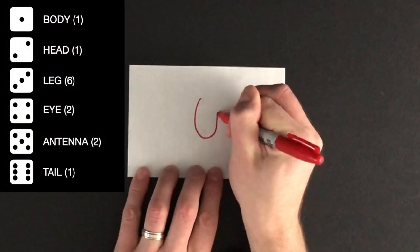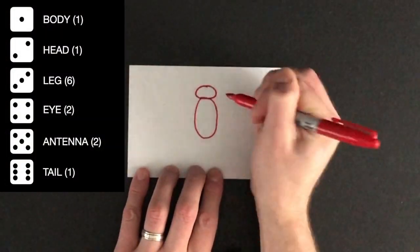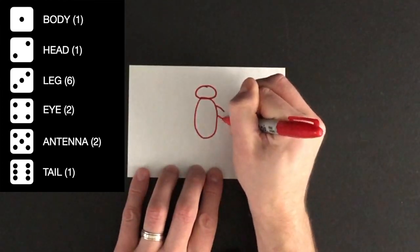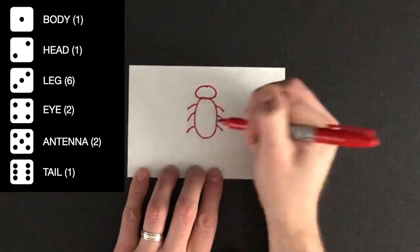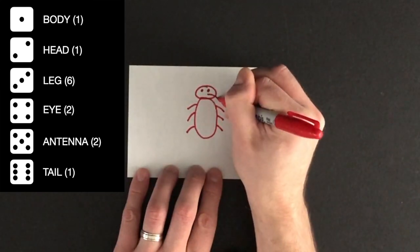The object of the game is to be the first player to draw a complete beetle. A complete beetle is drawn with a body, a head, six legs, two eyes, two antennae, and a tail.